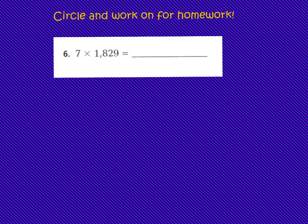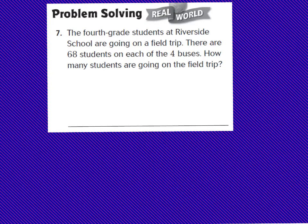We are going to circle number 6, and when you do your homework problems tonight you're going to come back and work on number 6 as well. Now let's look at number 7 — we're going to circle number 7 and write the word skip. We'll look at it tomorrow in class.